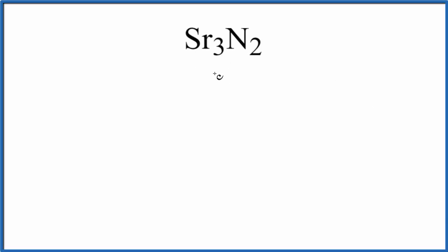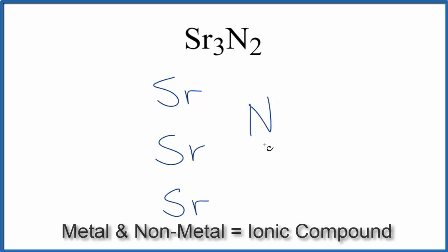In this video, we'll write the Lewis structure for the ionic compound Sr3N2, strontium nitride. So the first thing is, let's write the element symbols for strontium. We have three of these strontium atoms: Sr, Sr, Sr, and then for the nitrogen, we have two nitrogen atoms.